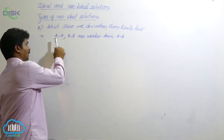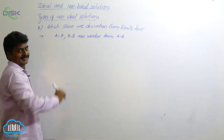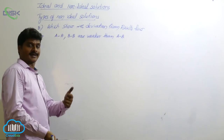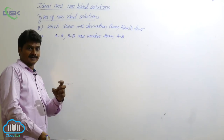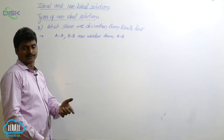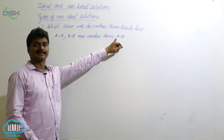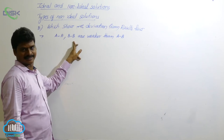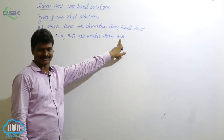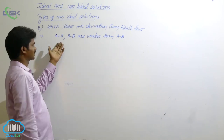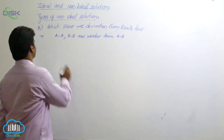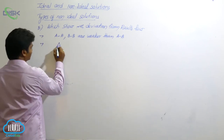So here, cohesion forces — cohesion means interaction between same particles — and adhesion, which means interaction between different particles. So these two are cohesion forces, and these are the adhesion forces. Here, cohesion forces are weaker than adhesion forces. What about enthalpy of mixing?